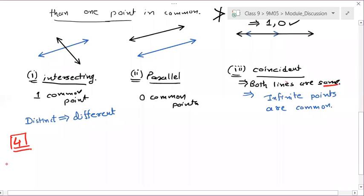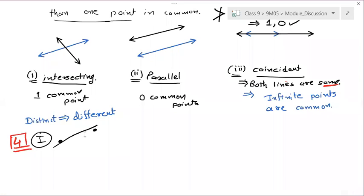Which of the following statements are true and which are false? First statement: a straight line can be drawn from one point to another. True. This is Euclid's first postulate.